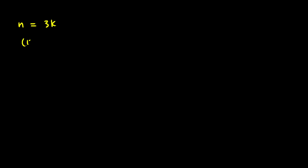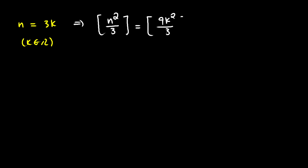Let's say n is in the form of 3k where k is an integer. Then the floor of n squared divided by 3 is going to be the floor of 9k² divided by 3, which gives us the floor of 3k². Since k is an integer, 3k² is an integer, and the floor of an integer is the integer itself, so this equals 3k².